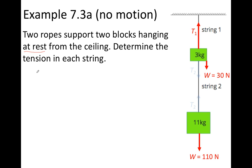The total force up is the tension in string 1, and the total force down is just going to be the sum of the weights of the blocks — 30 newtons from the weight of block 1 and 110 newtons from block 2, for a total of 140 newtons.